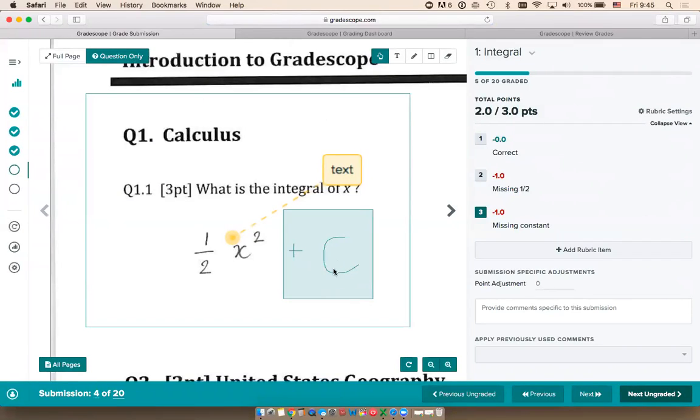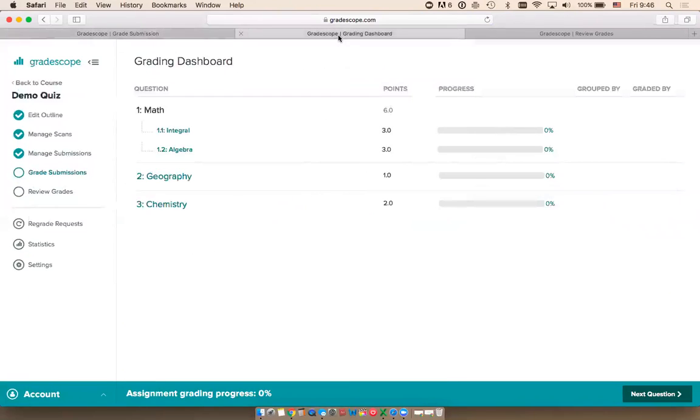Right now with this basic grading interface, we graded each submission one at a time—we were still looking at every single student's answer. With our AI-assisted grading and manual answer grouping features, we can grade even faster by grouping all the similar answers together and grading each group at once. I want to show you that next.